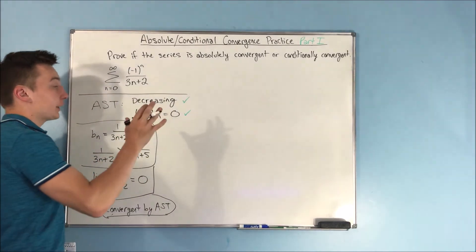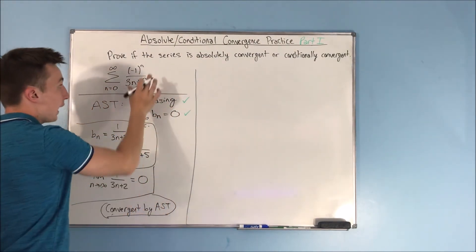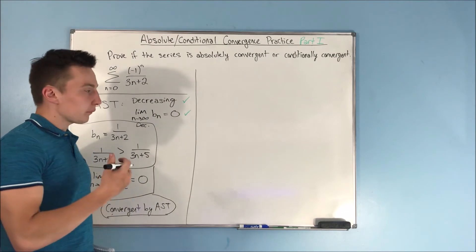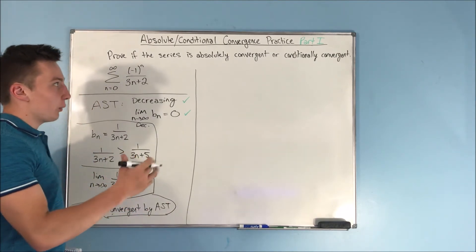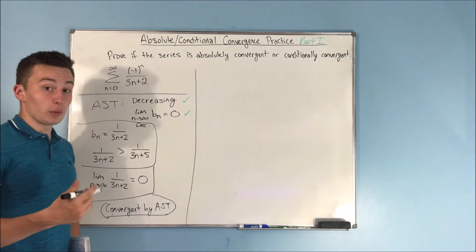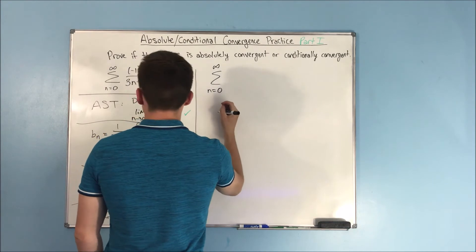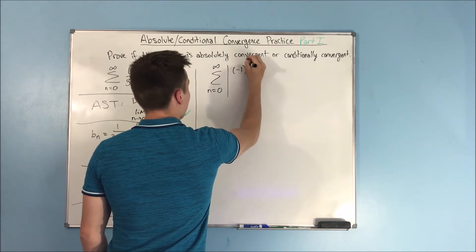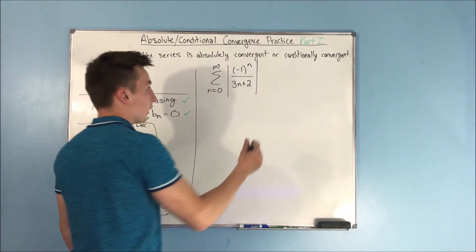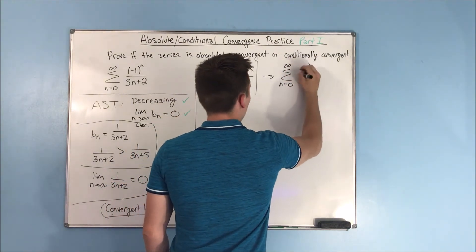Now we need to determine if this is absolutely convergent or conditionally convergent. To do that, we take the absolute value of the series. If that absolute value series is convergent, it's absolutely convergent; if it's divergent, it's only conditionally convergent. Taking the absolute value gives us the sum from n equals zero to infinity of one over three n plus two.